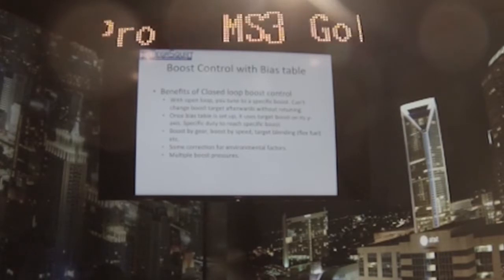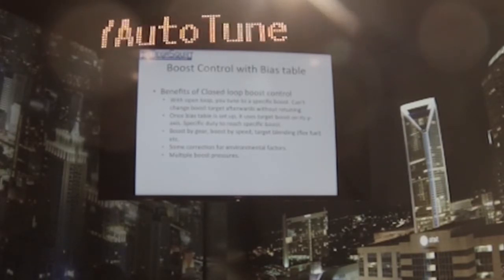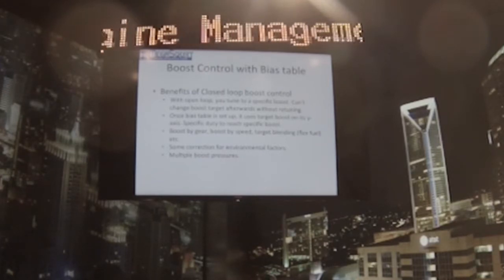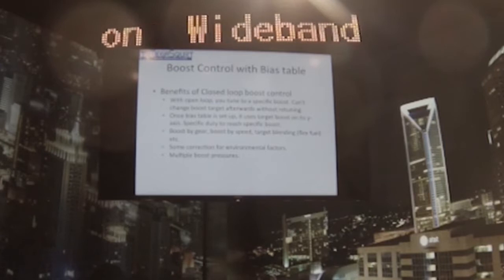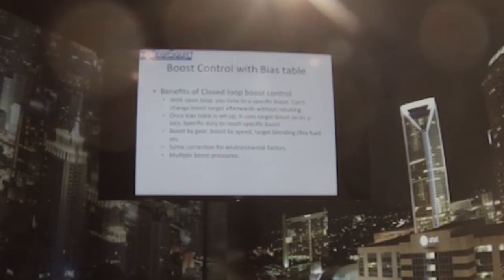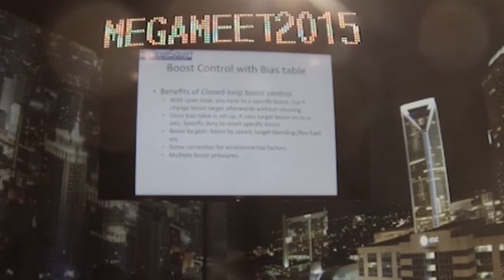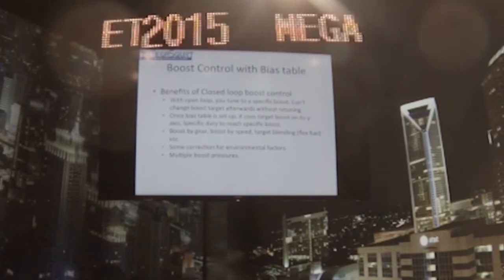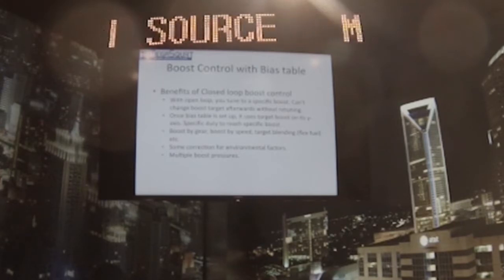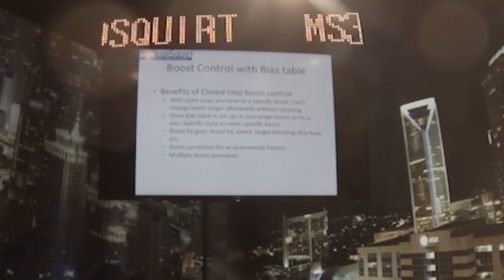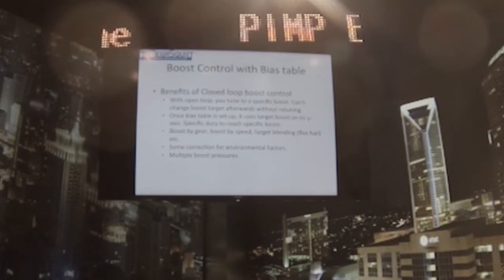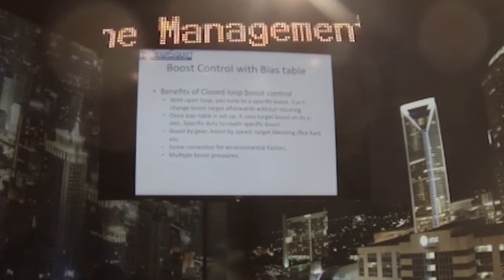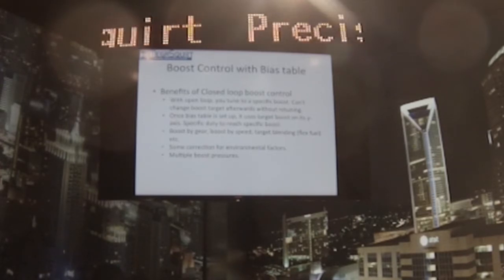With closed loop, once you tune all the tables and you've got it all working, you can change which boost targets you want pretty much on the fly. You can use features like boost by gear, boost by speed, target blending, and actually target a specific PSI or kPa number. For a drag racing application, closed loop boost makes it a lot easier — you can tune it for 150 kPa in first gear, then 200, 250 in second and third gear, and it'll run to that target.